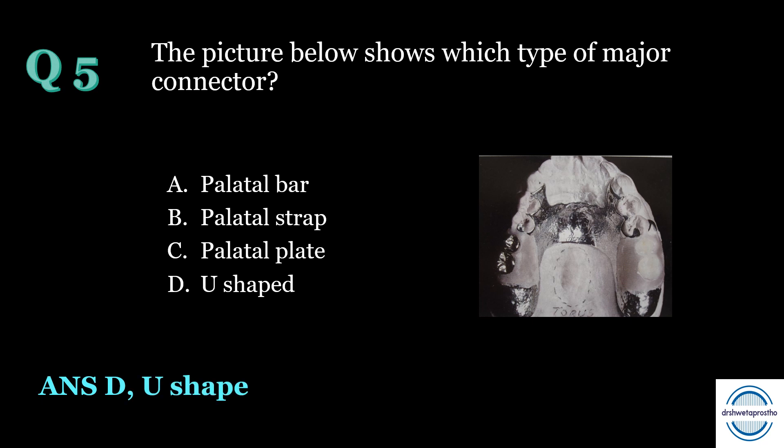Question number five answer: U-shaped major connector. It is also called the horseshoe connector. It is the least rigid major connector amongst all maxillary major connectors and gives very little cross-arch stabilization. It is mainly indicated in tori cases.